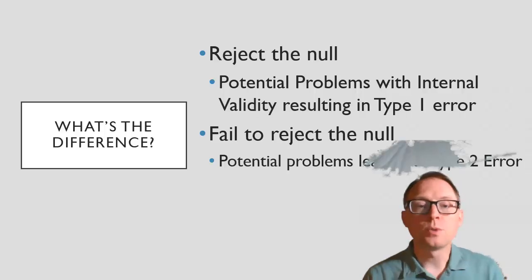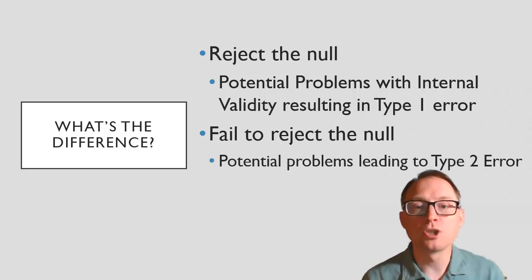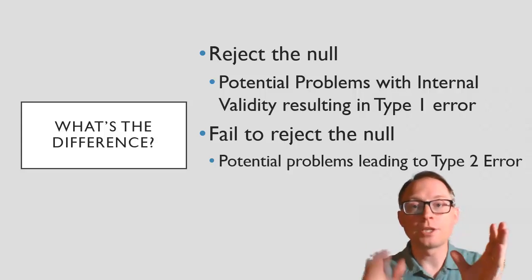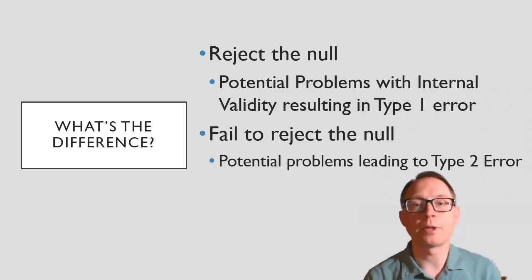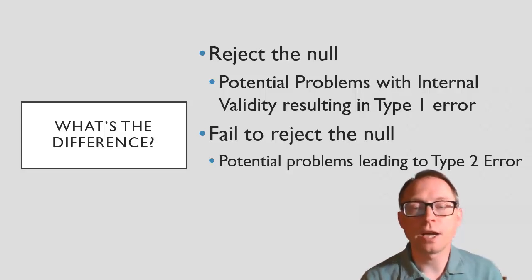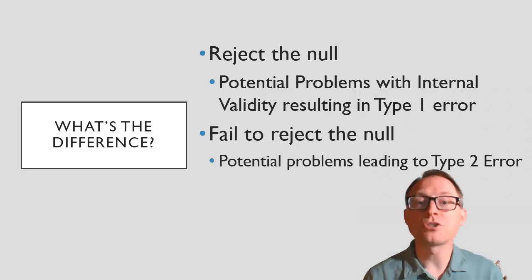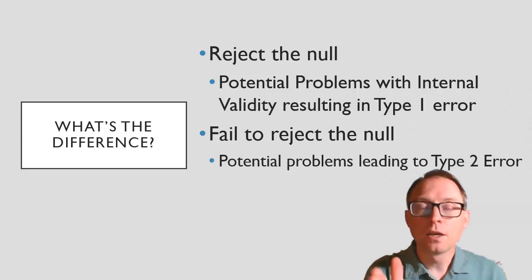When we look at these studies, we need to think about problems in rejecting the null versus failing to reject the null. When you reject the null, you have potential problems with internal validity. For example, if I say I think studying makes you happier, and this study shows you're happier right after your last final — well, if it wasn't because of studying but because you're not stressed anymore, then you're doubting the internal validity. The problems with internal validity are coming when you reject the null. You have a separate set of problems when you fail to reject the null.